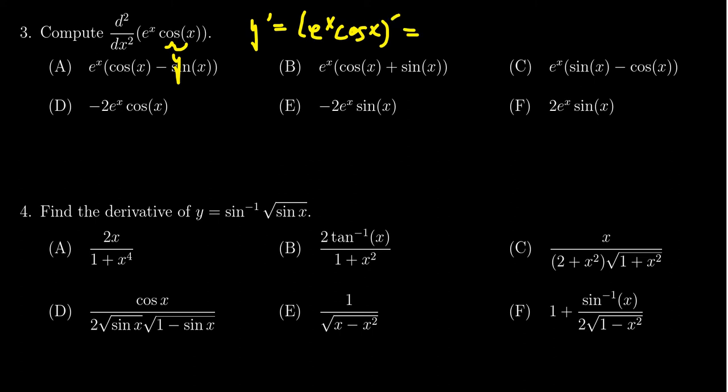This will require the product rule. So we have to take the derivative of e to the x times cosine, and then we have to add to that e to the x times the derivative of cosine. For which then we see that the derivative of e to the x is equal to e to the x. We get a cosine of x.